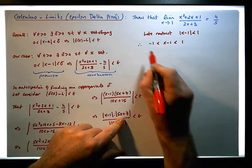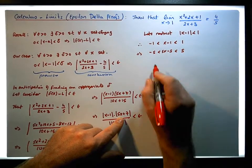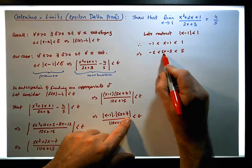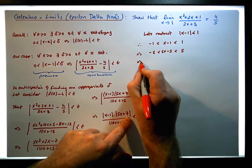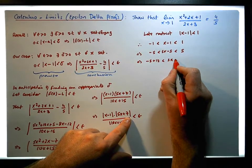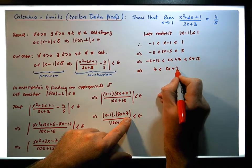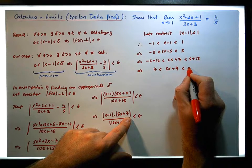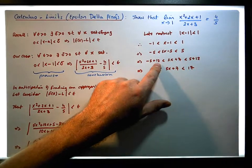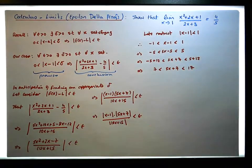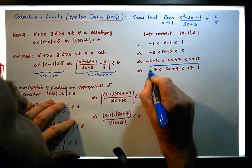Now I'm looking for 5x plus 7, so let's multiply across by 5. This implies that minus 5 is less than 5x minus 5, which is less than 5. Now I need a plus 7 in here, so if I add on a positive 12, this implies that minus 5 plus 12 is less than 5x plus 7, which is less than 5 plus 12. That gives us 7 is less than 5x plus 7, which is less than 17. So we've bounded 5x plus 7 above by 17 and below by 7.